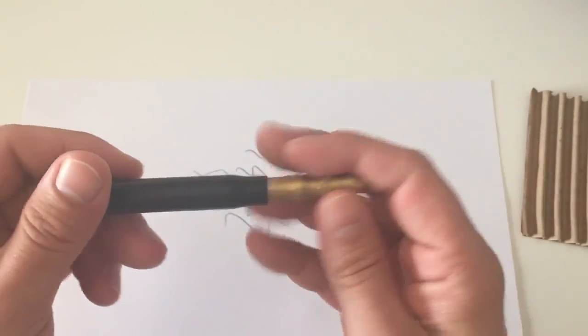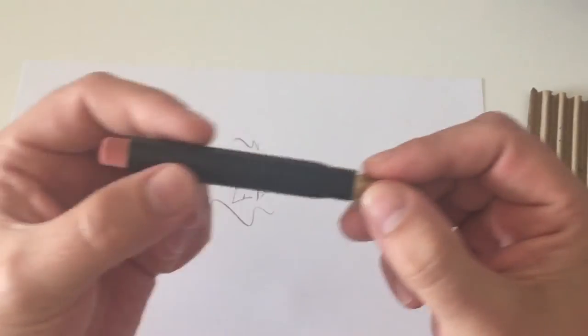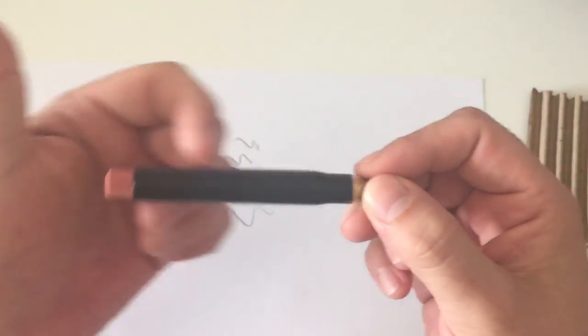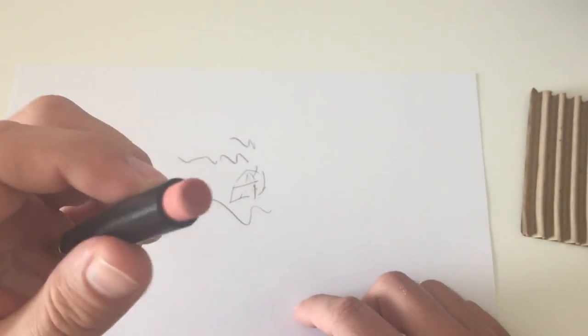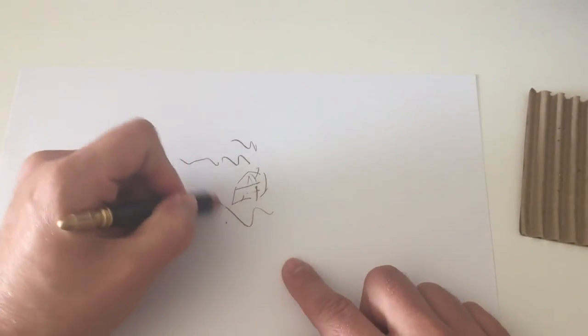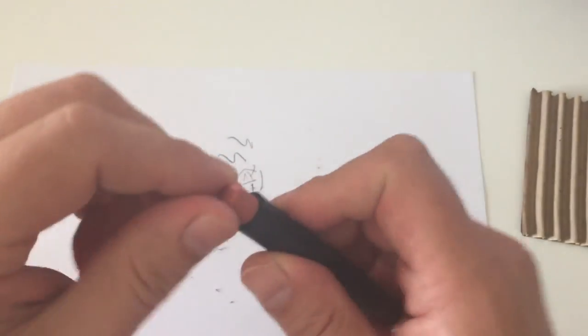Of course it's called a bullet pencil because it looks like a gun bullet. Here's the bullet and the body where the gunpowder would sit. It has an eraser that works pretty well, and you can replace the eraser.